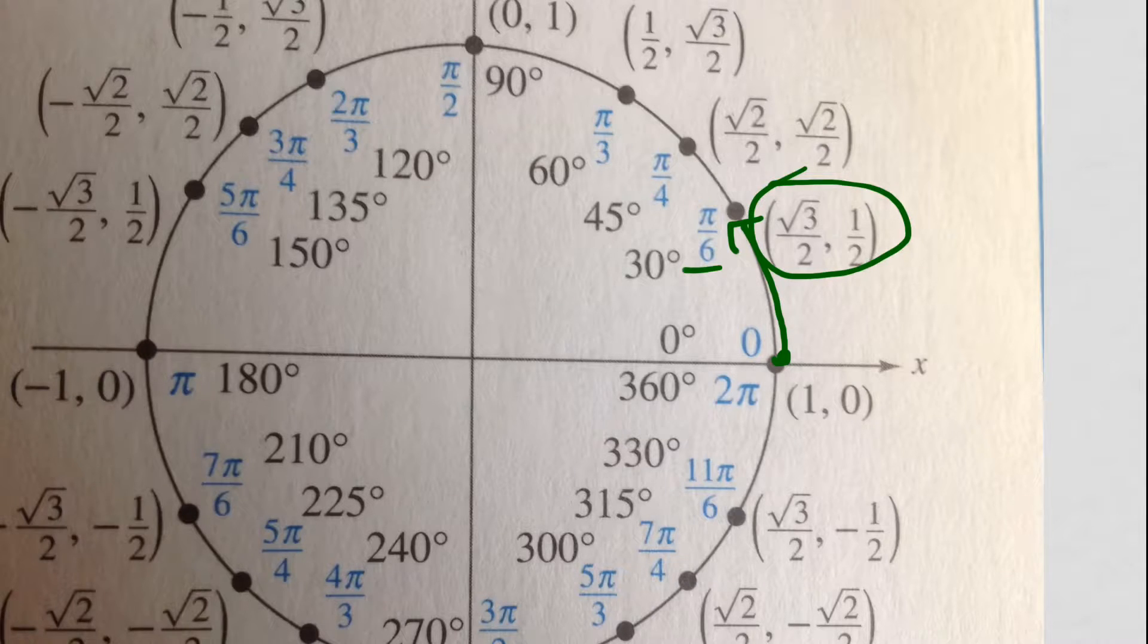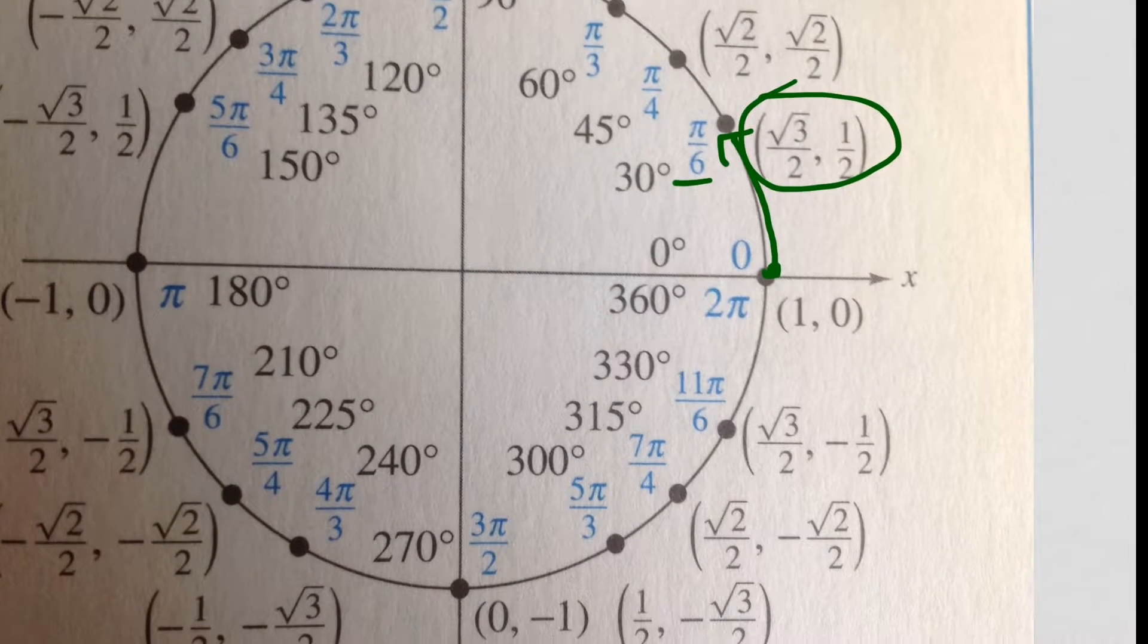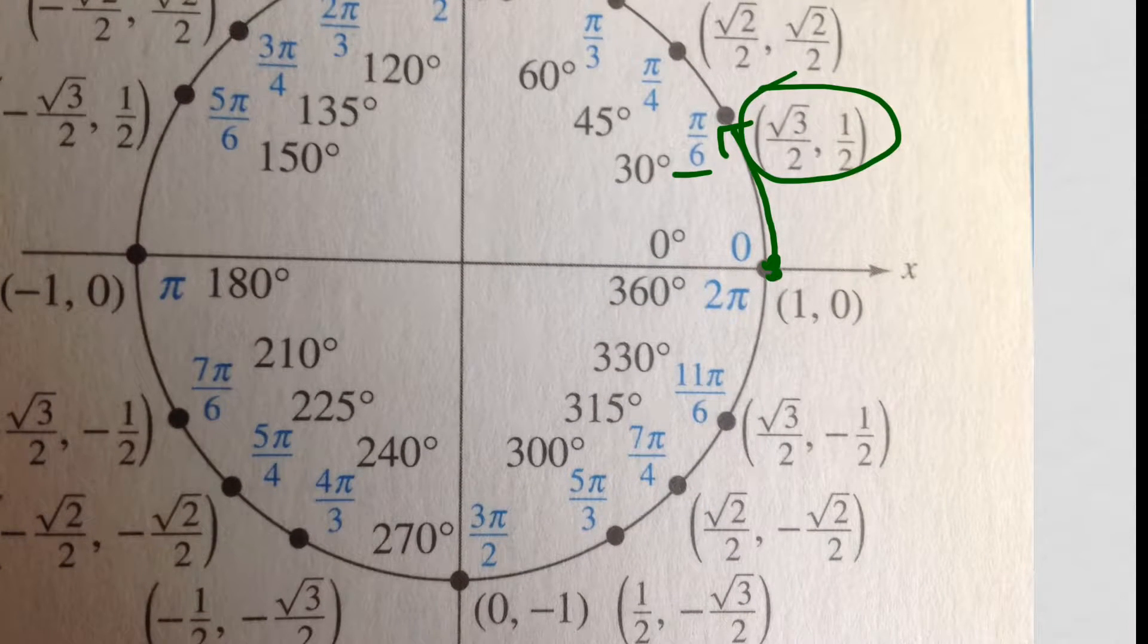All right, remember, t is just the distance. In this case, our t value is negative. We're starting here, but we're going to go in the negative direction, pi over 6. So if this distance going up is pi over 6, this same distance going down should be negative pi over 6. So we call this 11 pi over 6, but it's actually also negative pi over 6.